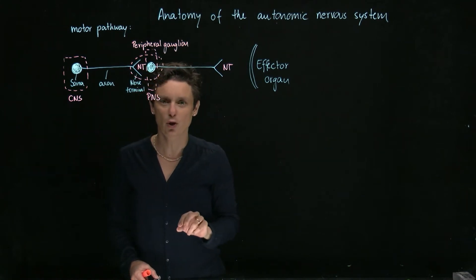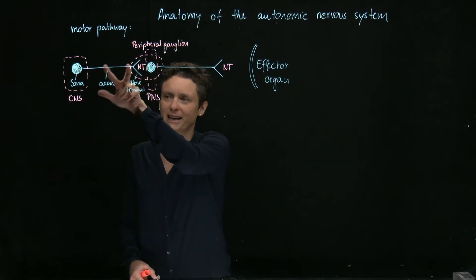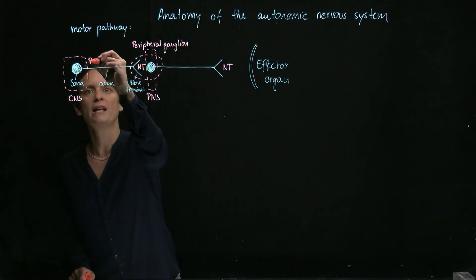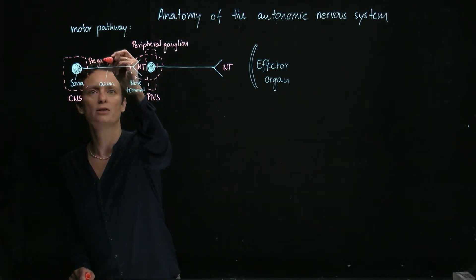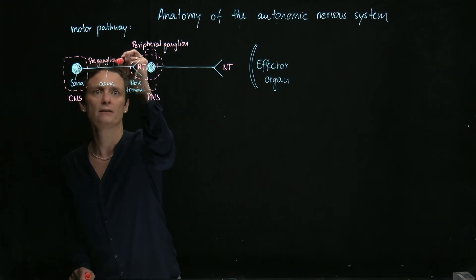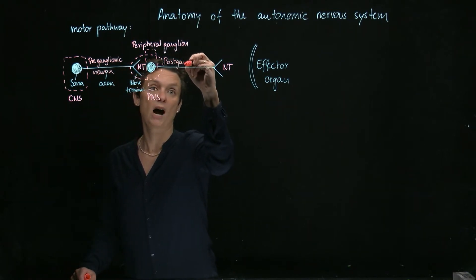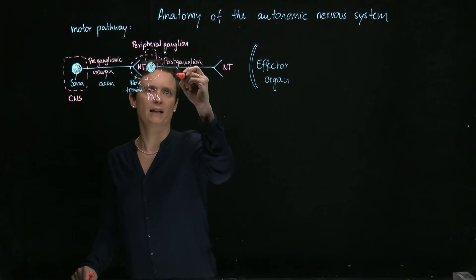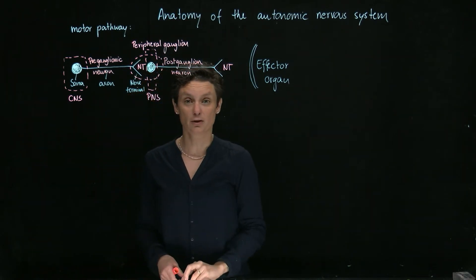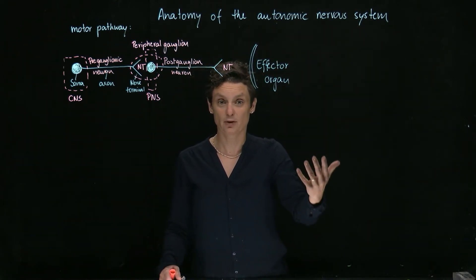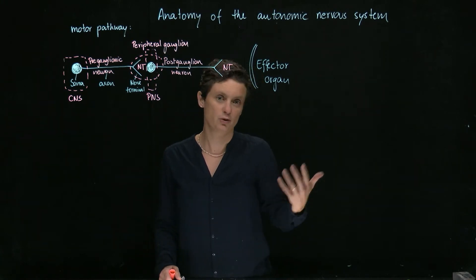This is a very important term because it defines the first and second neuron. They are not called first and second — they are called preganglionic, meaning before the ganglion, and postganglionic, meaning after the ganglion. This postganglionic neuron is also going to release a neurotransmitter, which can then act at the effector organ and produce a certain effect.